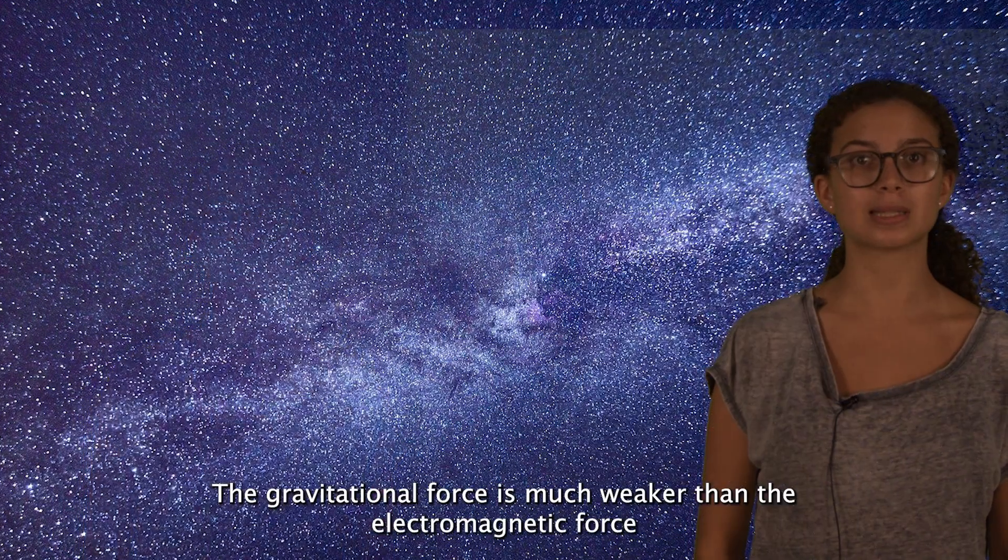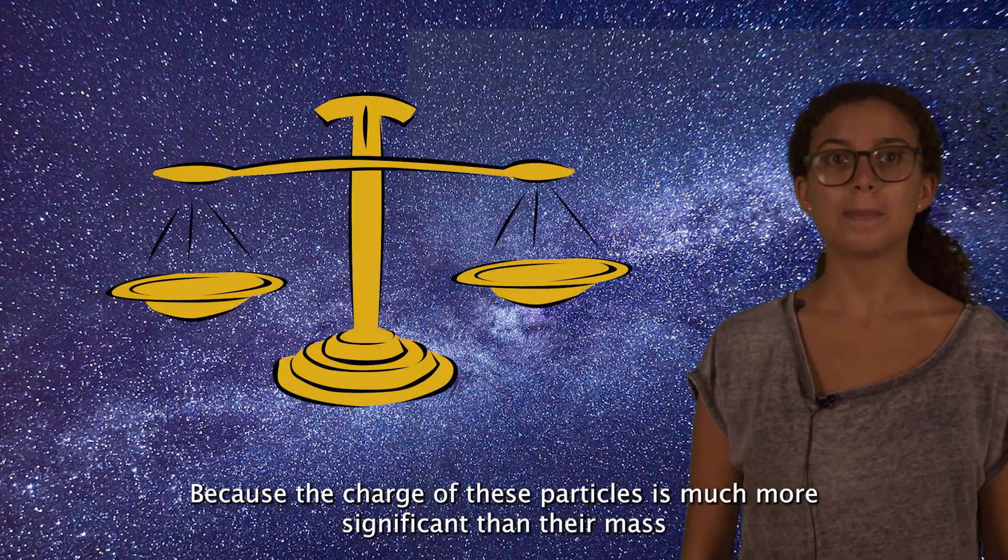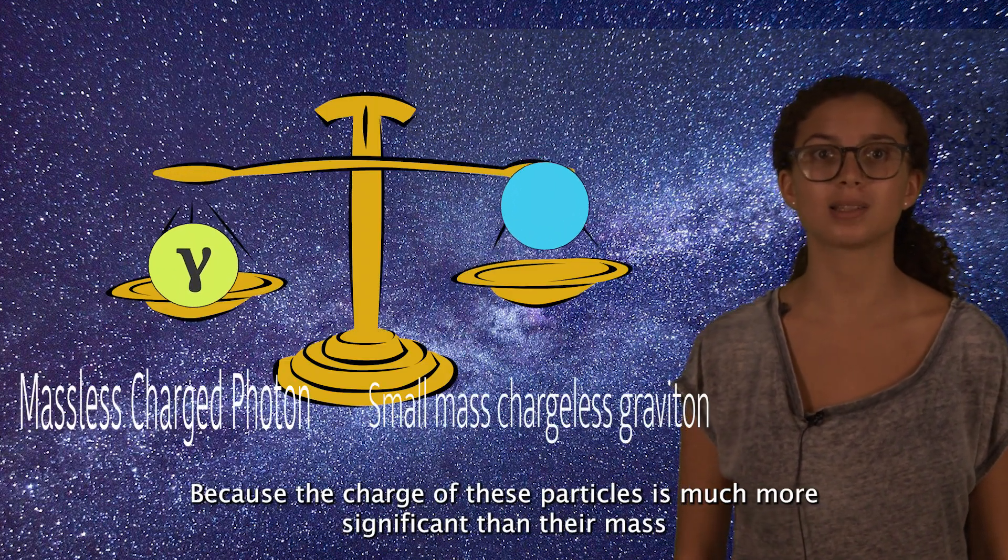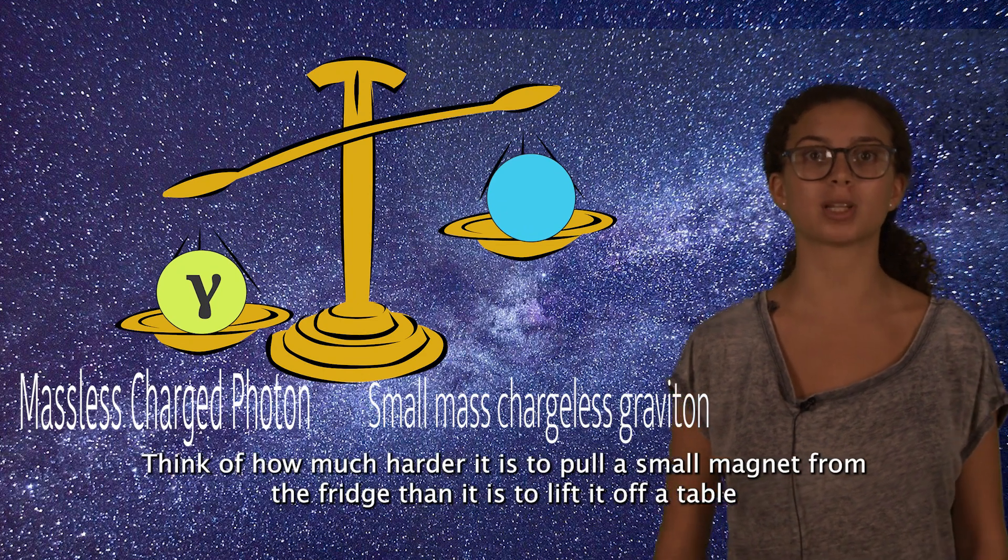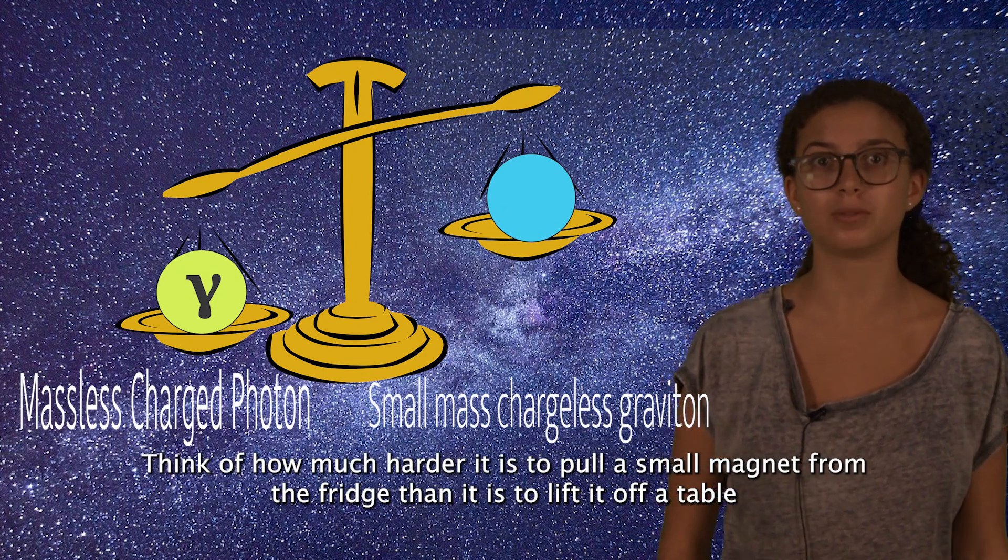The gravitational force is much weaker than the electromagnetic force, because the charge of these particles is much more significant than their mass. Think of how much harder it is to pull a small magnet off the fridge than it is to lift it off a table.